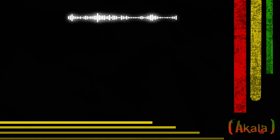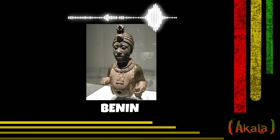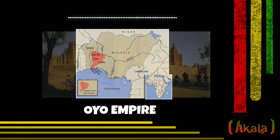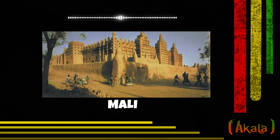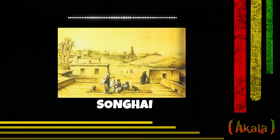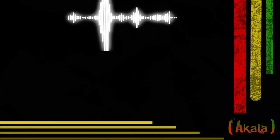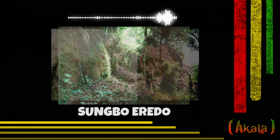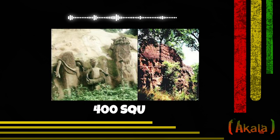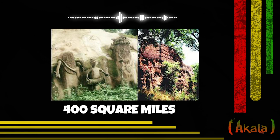In West Africa you have a history of empires and civilizations: the Kingdom of Benin, the Kingdom of Oyo, the Kingdom of Mali, the Kingdom of Songhai, and various different polities and civilizations — the universities of Timbuktu and Jenne. The Great Wall of Benin, which at its height was 10,000 miles long before it was destroyed, and the Sungbo's Eredo, which I rap about in my Fire in the Booth — a moat dug around the Yoruba kingdom, 20 meters wide, 70 meters deep, around an area of 400 square miles.